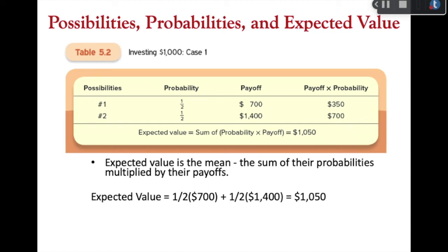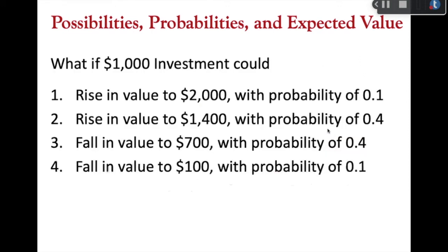Adding those two together gives an expected value of $700 + $350 = $1,050. That expected value is the mean — in this case $1,050. Keep in mind: in our example there is no scenario where my $1,000 investment turns into exactly $1,050. It will either turn into $1,400 or $700. This is the statistical average; if I'm risk neutral, it's as if that investment is worth $1,050.